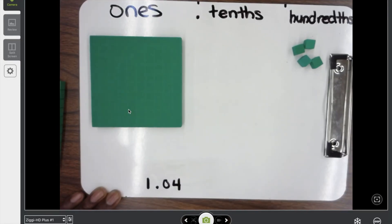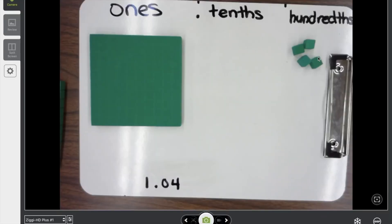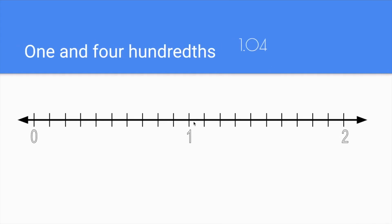One and four-hundredths. When we come back to the number line, it's written like this: one and four-hundredths. I'm at the number one and zero tenths. We don't want to move any tenths yet because we don't have any tenths, so we wouldn't go to one and one-tenth — we're just going to stay at one, but go a little bit past it. That's one and four-hundredths, not quite one and one-tenth yet.